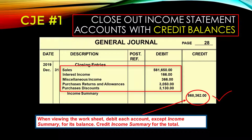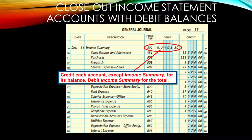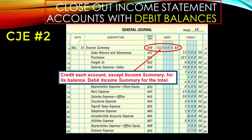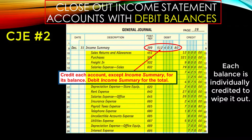This slide from the company in your textbook shows how the first closing journal entry would be placed in the journal. The second closing entry is to close out the income statement accounts with debit balances. Again, closing is a game of opposites — save a placeholder for income summary in the debit column, then go through and individually credit every income statement account that has a debit balance.